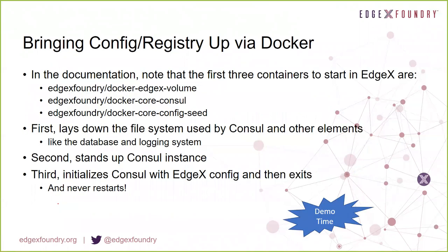How do you bring up the configuration and registration microservice via Docker? Typically we don't download it and run it natively — we just download a Docker container for convenience. There are three parts: the Consul part, the watcher part, and the config seed, plus an element called the EdgeX volume — a file space in Docker used by Consul, the database, and the logging system. First you bring up the EdgeX volume container, then the Consul container, then the core config seed which initializes Consul.